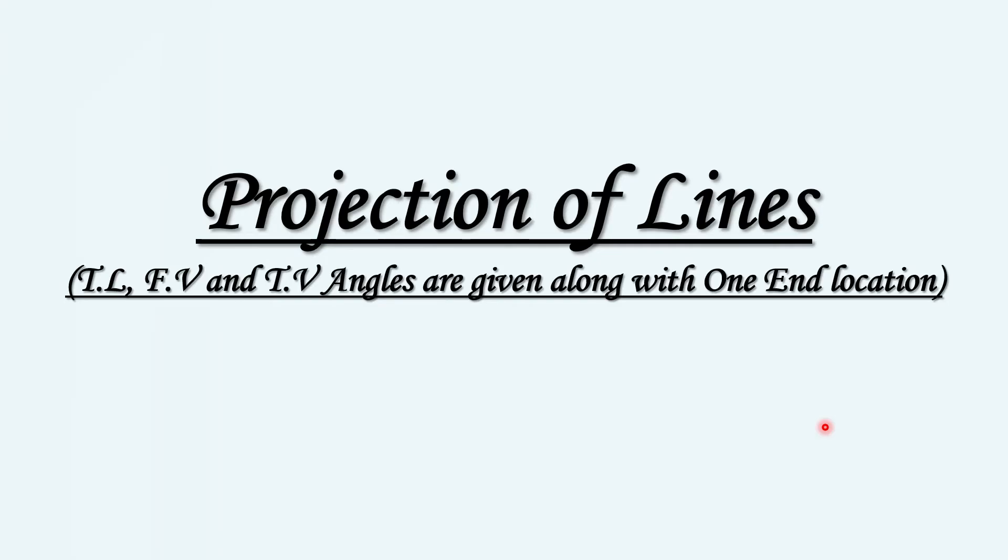Welcome to All About Mechanical Engineering. In today's video, we will look at a question on projection of lines in which true length, front view, and top view angles (alpha and beta) are given to us with one end location of the line, whereas the lengths of the front view and top view are not mentioned. It's one of the tricky questions for projection of lines. Watch the video completely to have a better understanding.